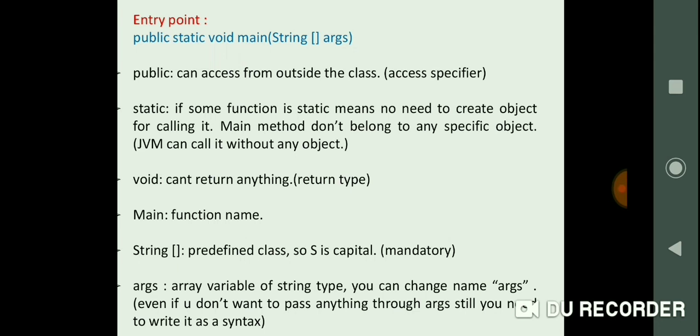The last point of this video is entry point of the Java program. We need to write public static void main in brackets String, brackets and args. I'll be just explaining the meaning of each word. Public is we can access from outside the class, so it is access specifier. Static is if some function is static means no need to create object for calling it. Whenever we write it we don't have any need to call the main function. It will directly get called by itself. That is why the word static is used. Main method doesn't belong to any specific object. JVM can call it without any object. The third word is void. Void is it cannot return anything, that is a return type. And main is a function name.